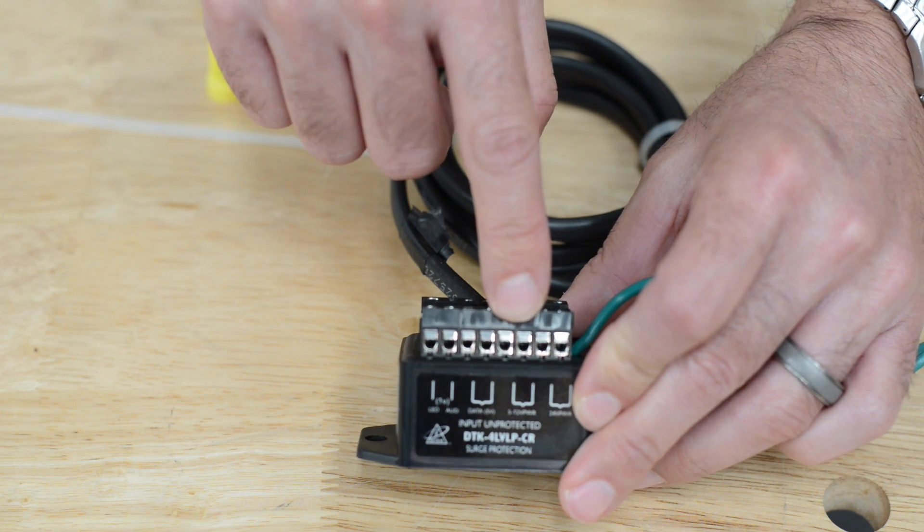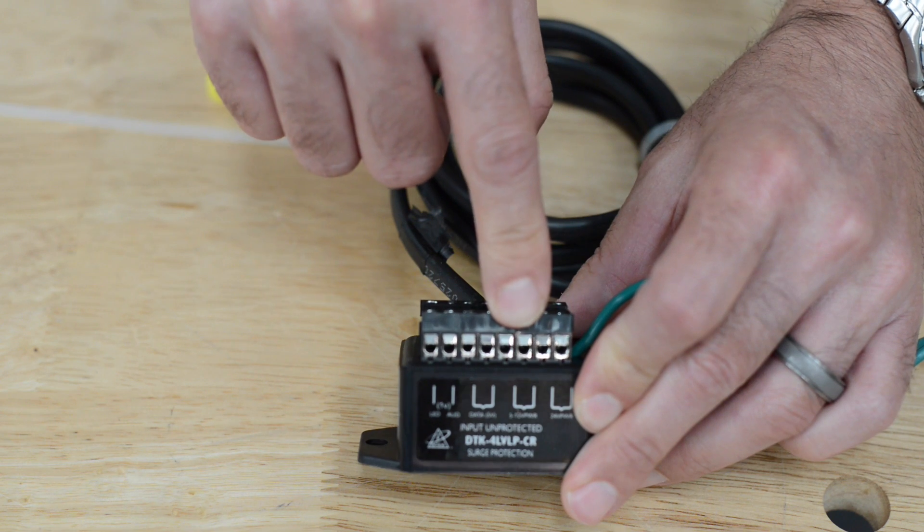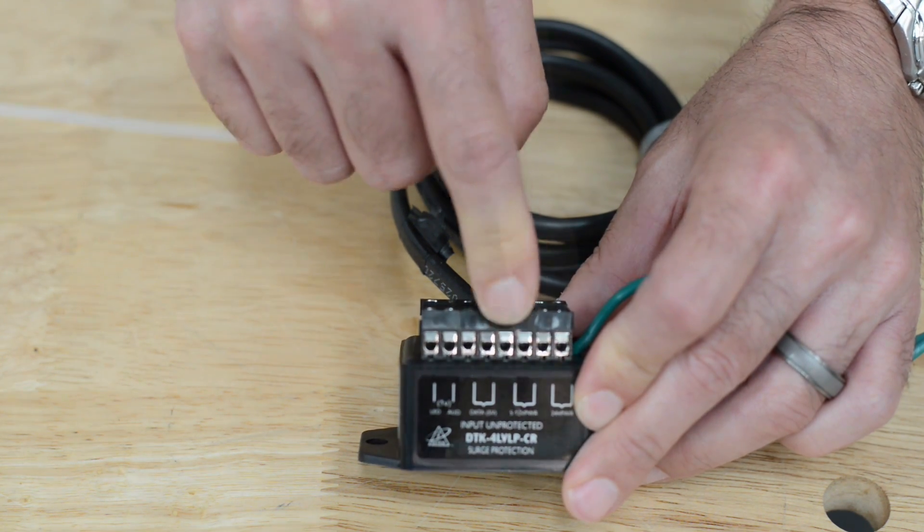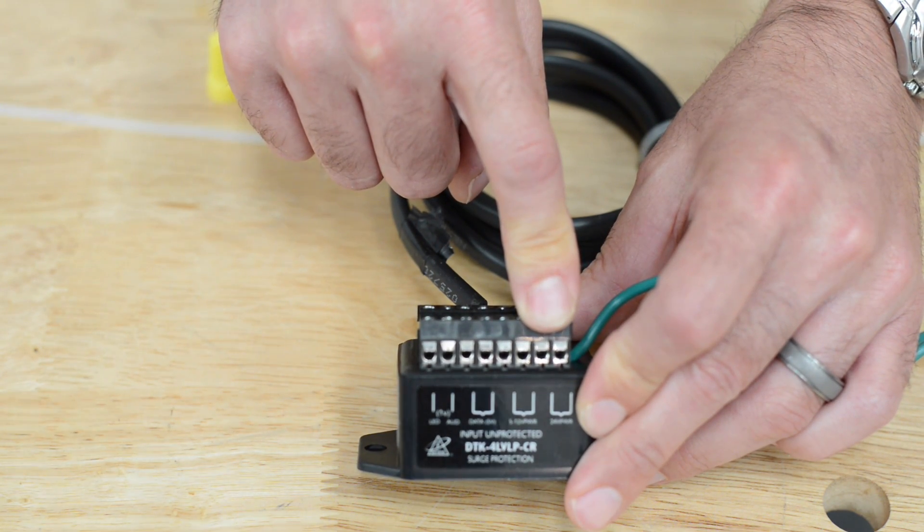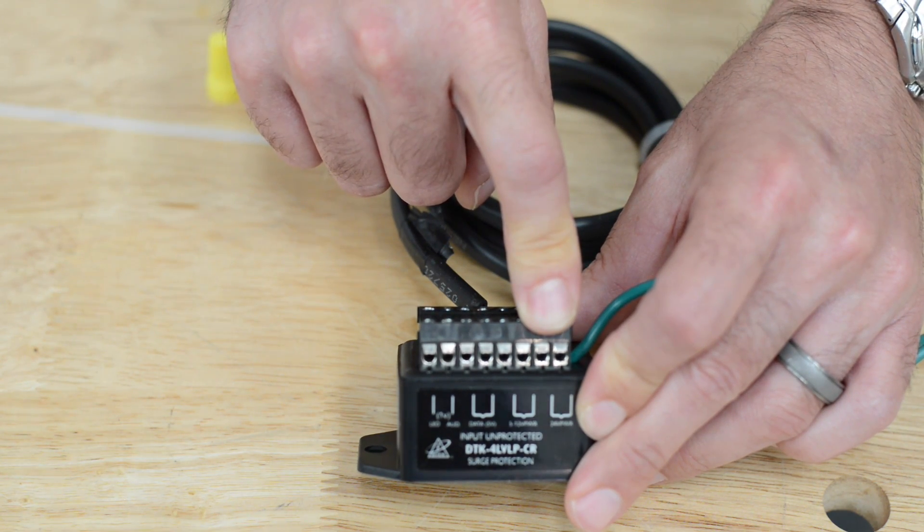The 12 volt can also be used to protect the relays, but you can also use it for incoming power if it's 12 volt power. The 24 volt can be used for lower power sources such as 12 volt, as long as you don't exceed the 24 volt.